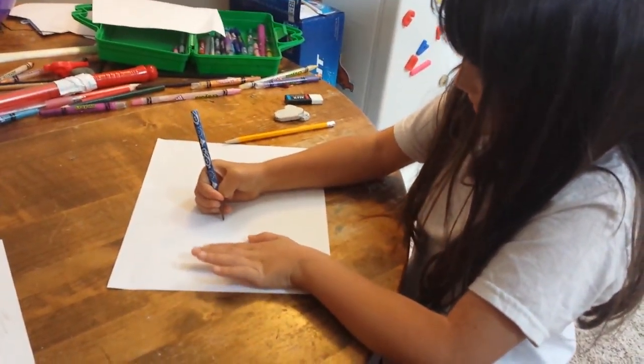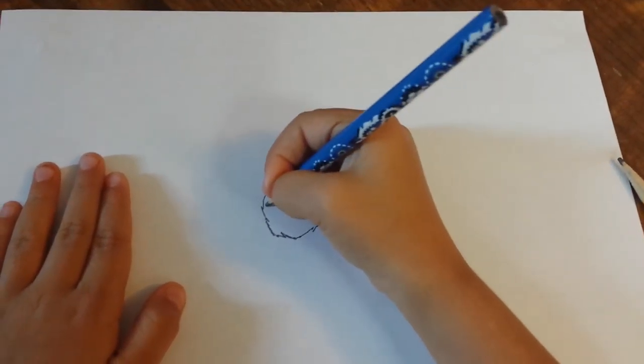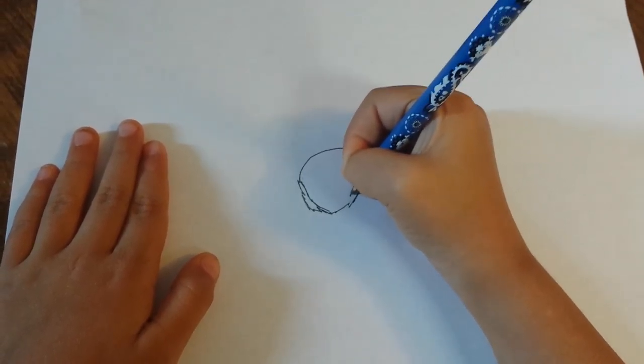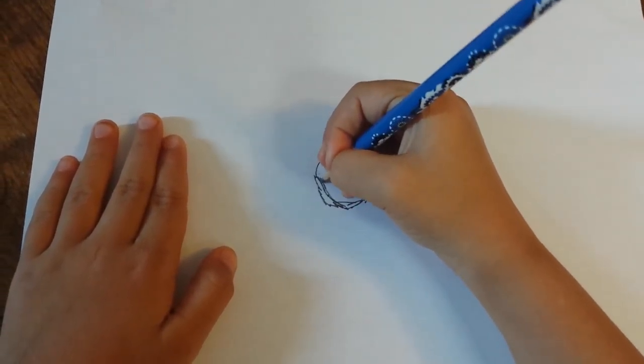So first, to draw a tiger, you do a half loop. Then you kind of do kind of a triangle, a small triangle as you go down.